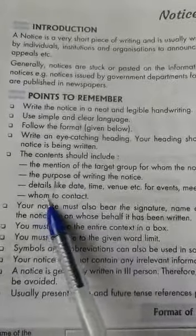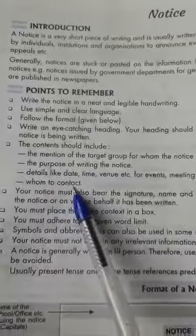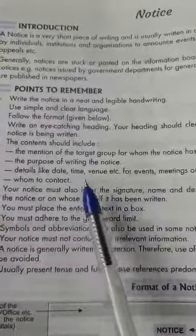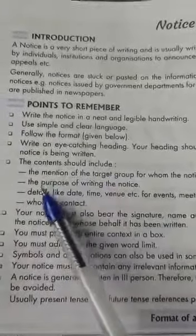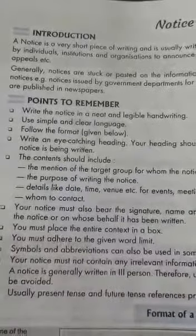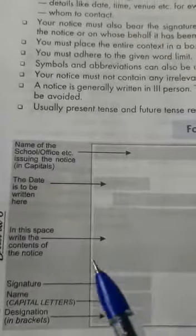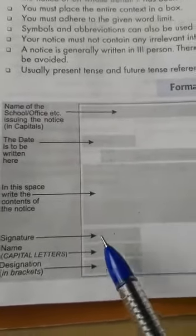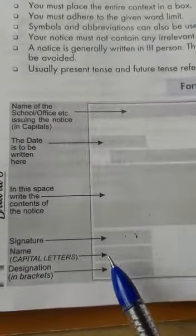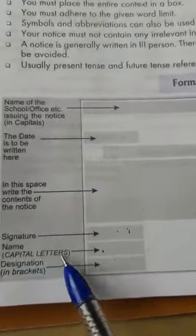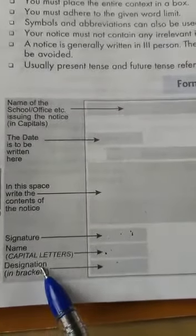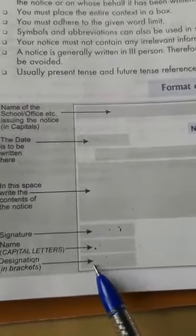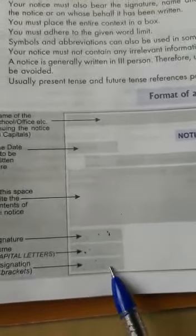Regarding the content of the notice, also mention whom to contact — if there is any inquiry, a description of that person should be mentioned. Then comes the signature of the person drafting the notice. The name of that person should also be mentioned in capital letters. Next is the designation — meaning the post. Whether you are a head boy, head girl, monitor, sports monitor, or secretary of a cultural group, whichever designation you hold, you have to mention it here.